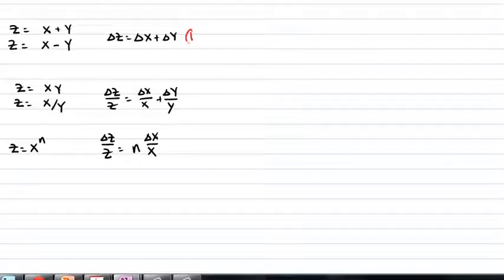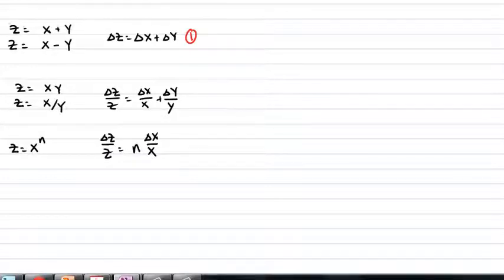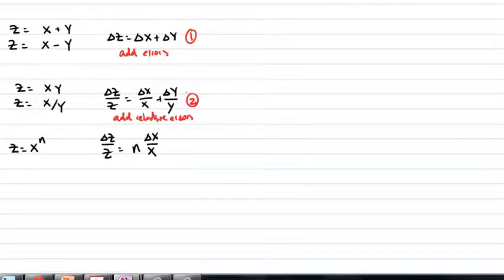The first one: if we have a quantity z which depends upon x and y in an additive or subtractive form, and there is an uncertainty associated with the value x plus or minus delta x, and uncertainty of y plus or minus delta y, then there's going to be uncertainty in z. How we find that uncertainty is we just add the errors. However, if z depends on x with either multiplication or division, then we add the relative errors. A relative error is basically the uncertainty in the quantity, say delta x, divided by the quantity itself, x.